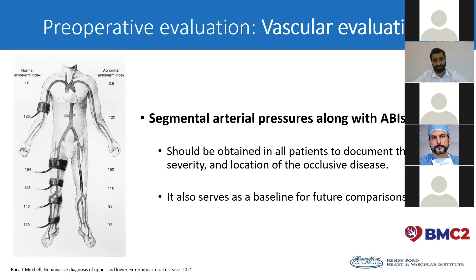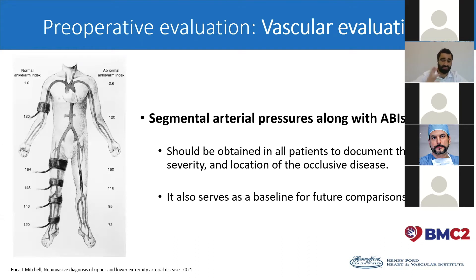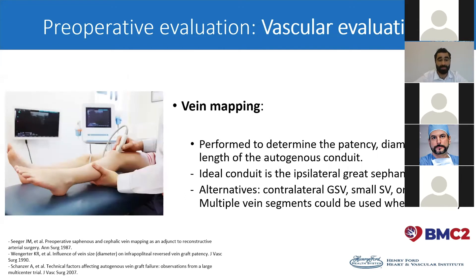As for the vascular evaluation, all patients undergo segmental arterial pressures along with ankle-brachial index series, as you can see in the illustration on the left. It helps us document the extent, severity, and location of the occlusive disease, and also serves as a baseline for future comparisons. Vein mapping is equally important — it helps us in determining the patency, diameter, and length of the autogenous conduit to be used. The ideal conduit is the ipsilateral great saphenous vein.